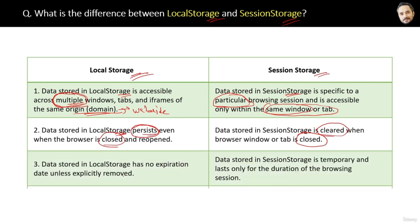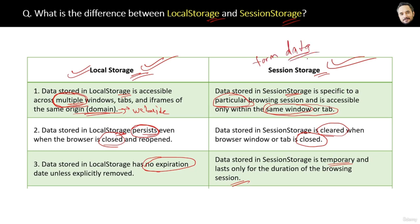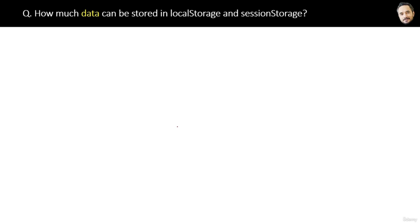The last difference: local storage data has no expiration date, whereas session storage data is temporary and lasts only for the duration of the browsing session. Based on your requirement, choose accordingly — for usernames and credentials, local storage is better; for form data, step-by-step processes, or e-cart items, session storage is more appropriate. Most browsers support 5 to 10 MB of data per origin — Chrome supports 10 MB, Firefox 10 MB, Safari 5 MB, and Edge 10 MB.